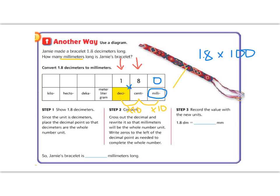So what I did was I took 1.8, and I multiplied by 100. So 1.8 decimeters is 180 millimeters. I got rid of my decimal when I multiplied. So Jamie's bracelet is 180 millimeters. Great job so far, 5th graders.